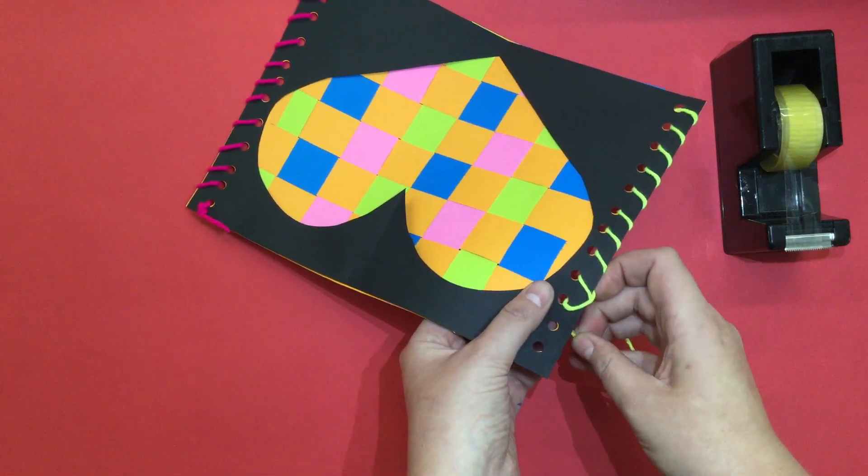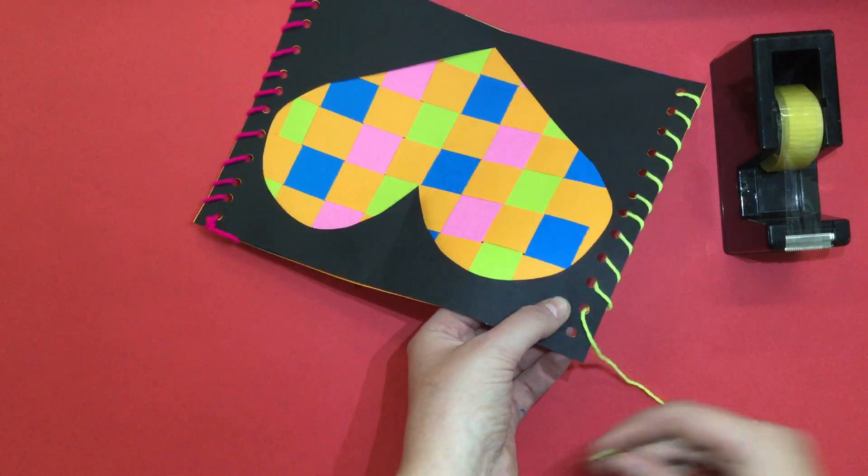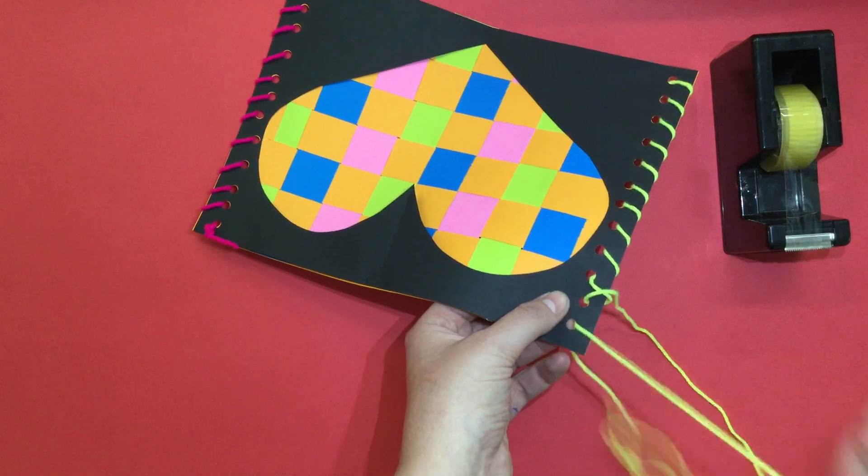This stitch is very simple to do because you are always entering the hole from the same side. You're always entering it from the bottom.